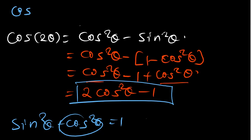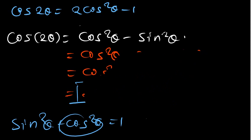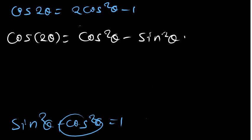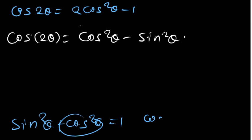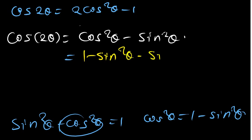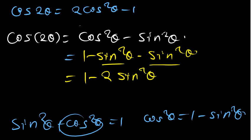Another identity for cos 2 theta is that it can be replaced by 2 cos squared theta minus 1. Now, if we want to make cos squared theta the subject, we can also make cos squared theta the subject from the parent identity sin squared theta plus cos squared theta equals 1, giving cos squared theta equals 1 minus sin squared theta. Substituting, we get 1 minus sin squared theta minus sin squared theta, which is 1 minus 2 sin squared theta. So cos 2 theta can also be replaced by 1 minus 2 sin squared theta.